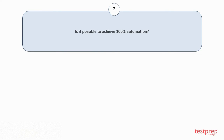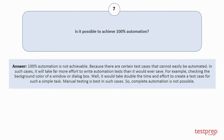Question number seven: Is it possible to achieve 100% automation? 100% automation is not achievable because there are certain test cases that cannot easily be automated. In such cases, it will take far more effort to write automation tests than it would ever save. For example, checking the background color of a window or dialog box would take double the time and effort, so manual testing is best in such cases.